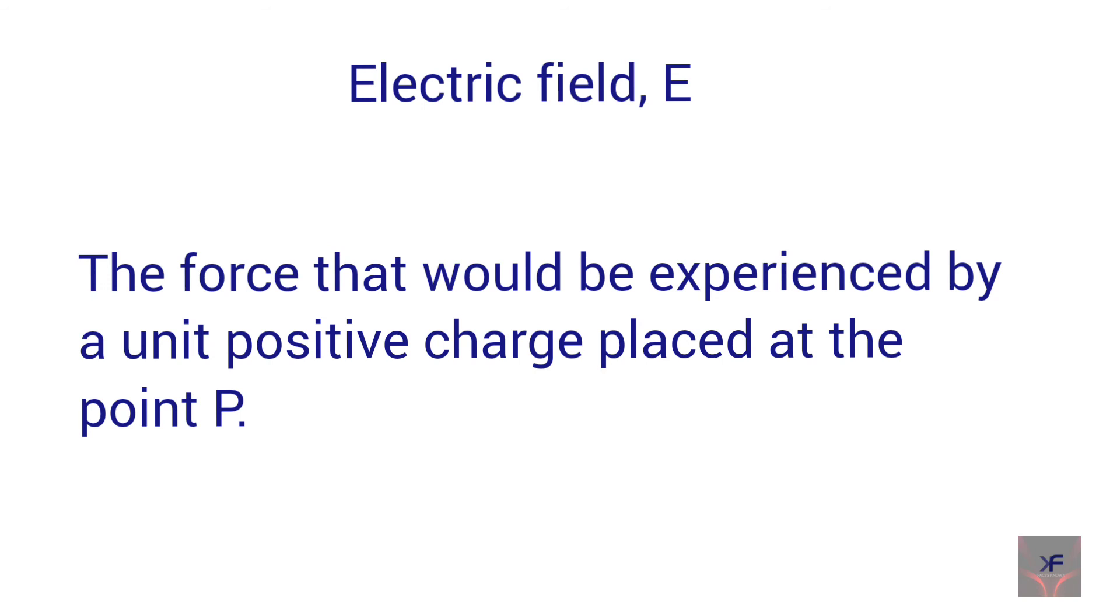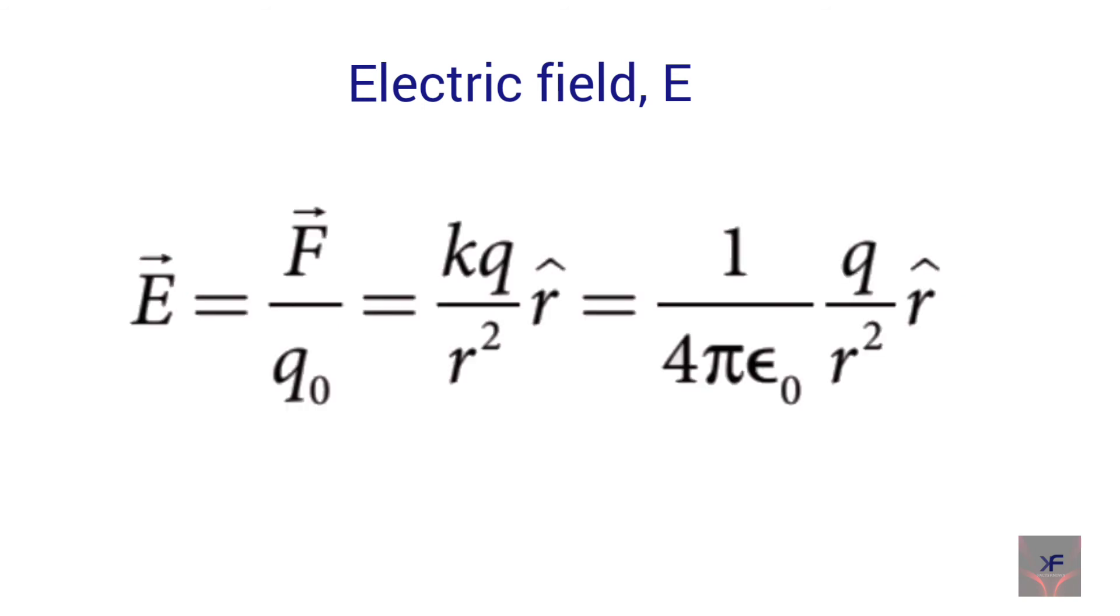This is given as E is equal to F divided by Q0, which is equal to K into Q divided by R square and the whole multiplied by vector R, where both Q0 gets cancelled.